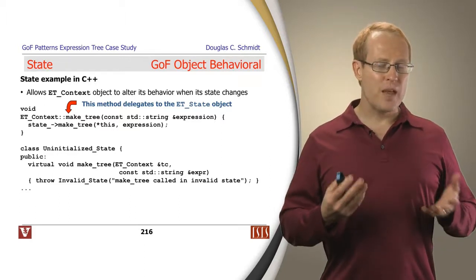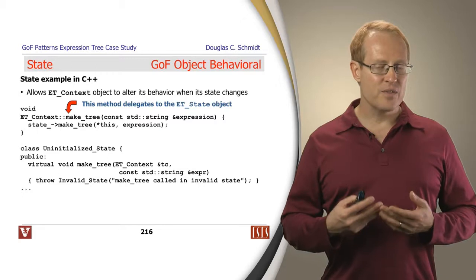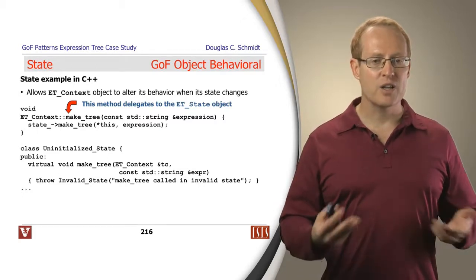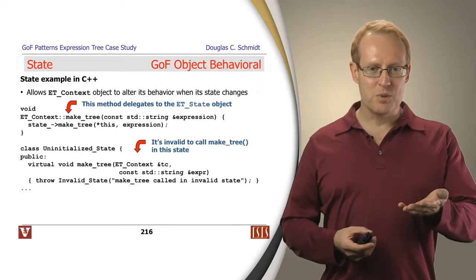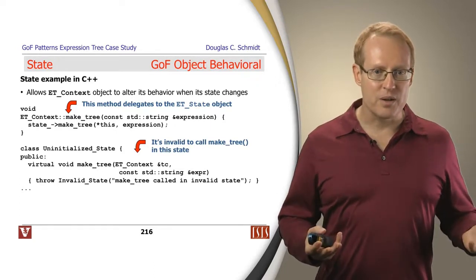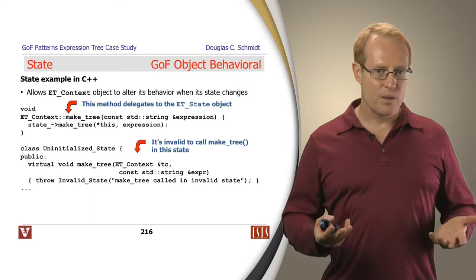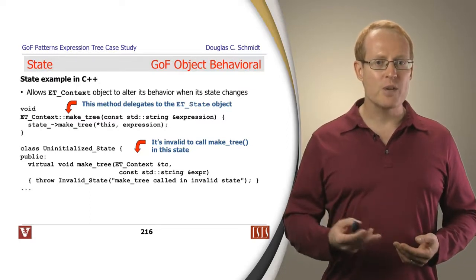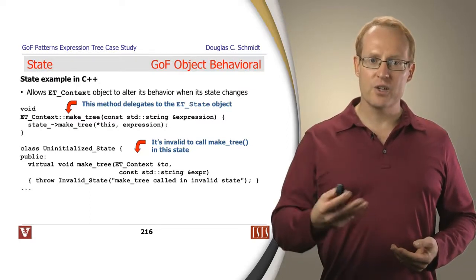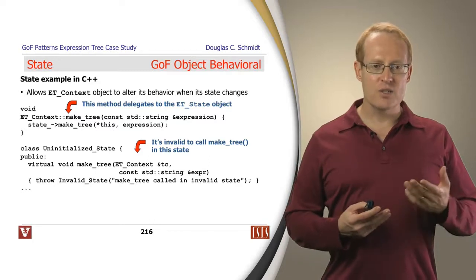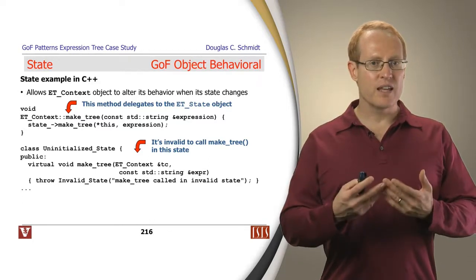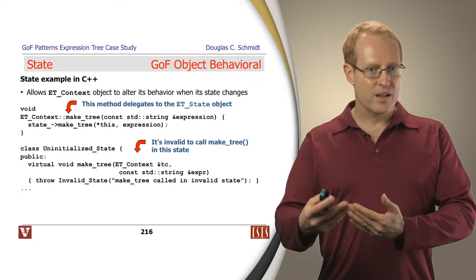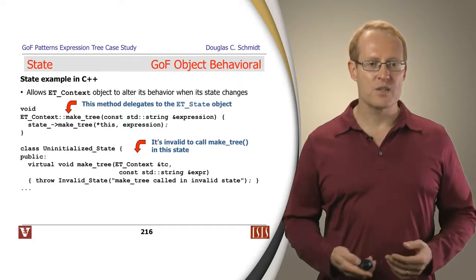Now if you've made this call and the context object was in the wrong state, if it was in the uninitialized state, you can see what happens here. In this particular case it's going to throw an exception because it's not appropriate for makeTree to be called when we are in the uninitialized state. And you'll also notice how the context's makeTree method delegates itself down to the state method. And we'll see why it does that in just a second.